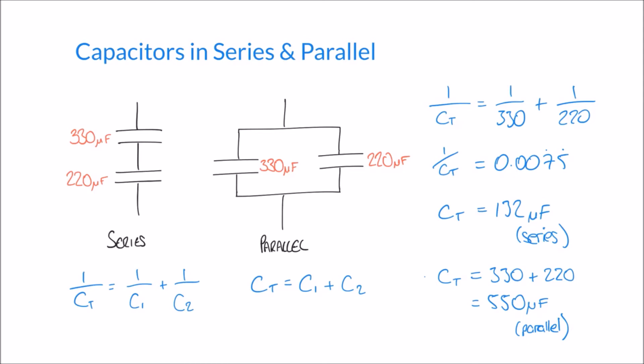If we've only got two, we can get away with using an alternative formula, which looks like this. It's CT equals C1 times C2 over C1 plus C2.